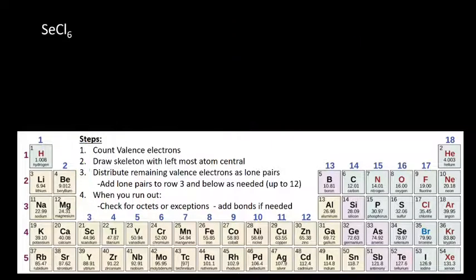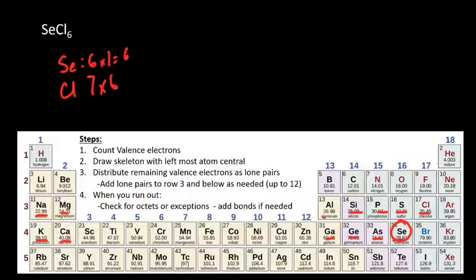Last example: SeCl6. First, count valence electrons. Selenium is over here. It's going to have six valence electrons - skip the D block. So six times one gives me six. And now chlorine has seven valence electrons, times six because there's six chlorines. Seven times six is 42, which means when we add those up, we have 48 total valence electrons. That's a lot.